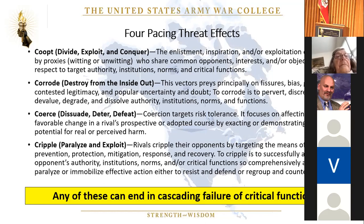Co-opt is the inspiration, enlistment, or exploitation of action by others who share common opponents' interests or objectives—this could be witting or unwitting co-option. The point is to divide a rival, exploit division, and then conquer according to that exploitation. Corrosion is to destroy from the inside out—this preys principally on fissures or divisions, bias, grievance, contested legitimacy, and popular uncertainty and doubt, and attempts to pervert, discredit, devalue, and degrade or dissolve authority, institutions, norms, and functions. It works from the inside out to sow division and create vulnerability without it actually being an obvious external attack.